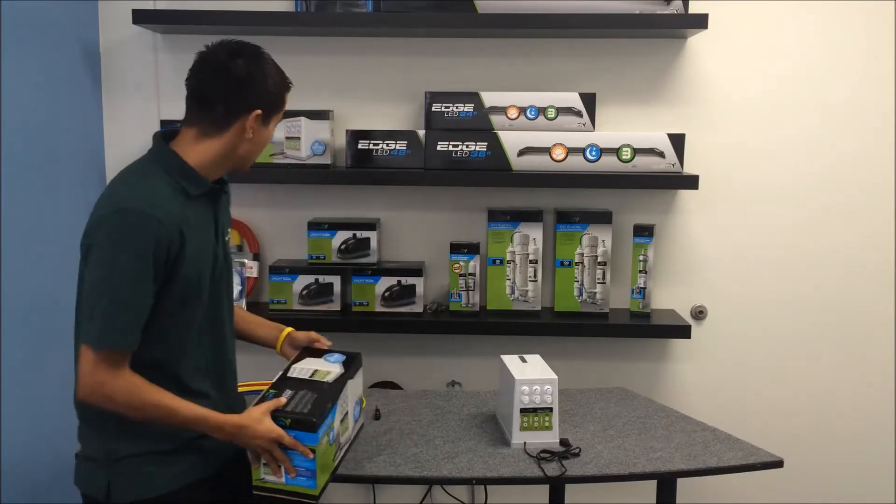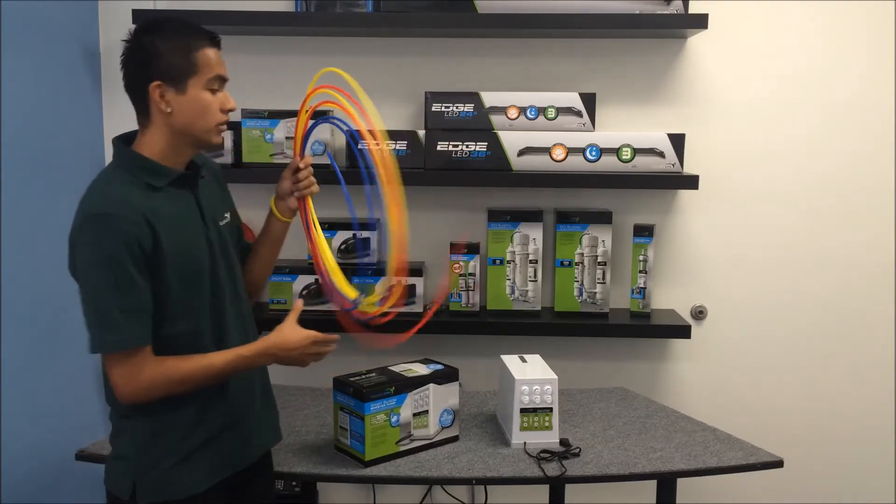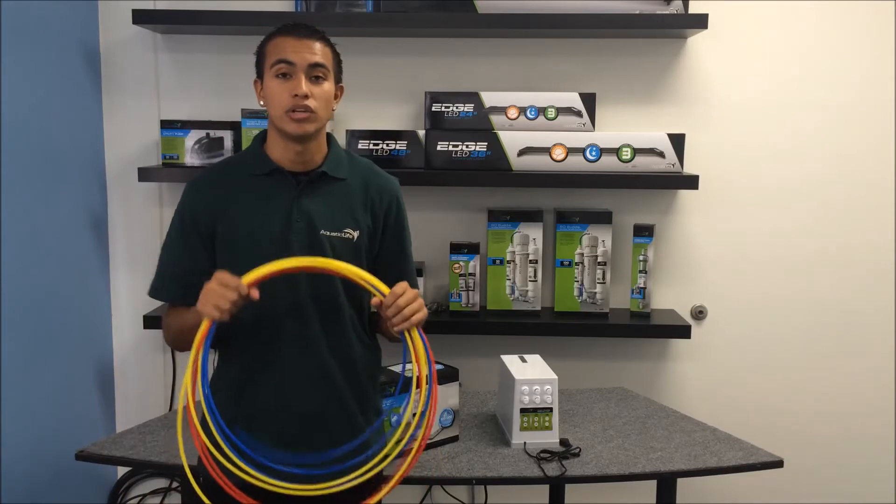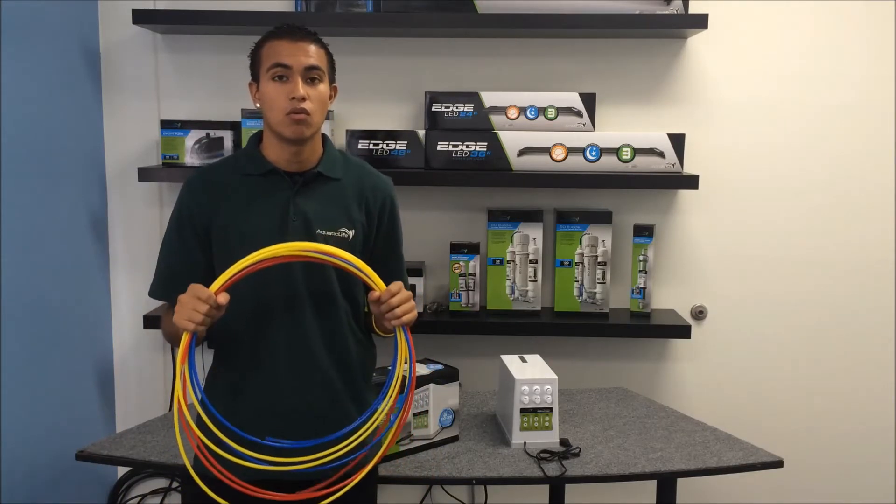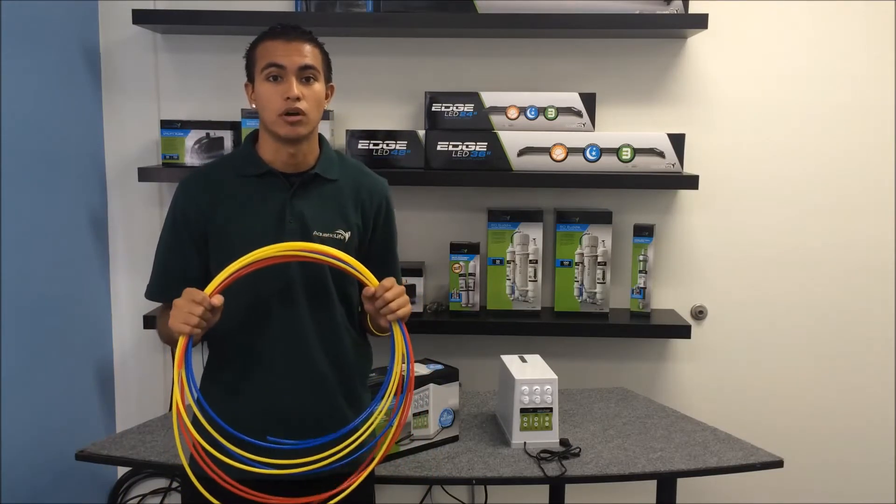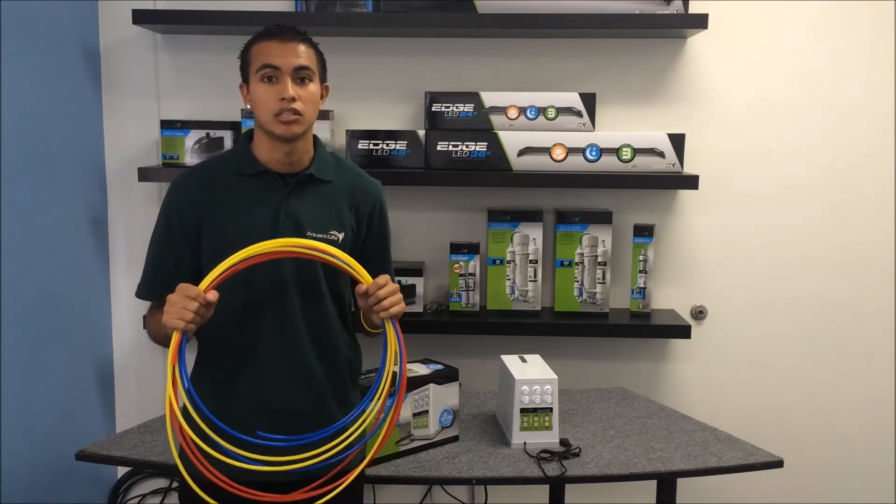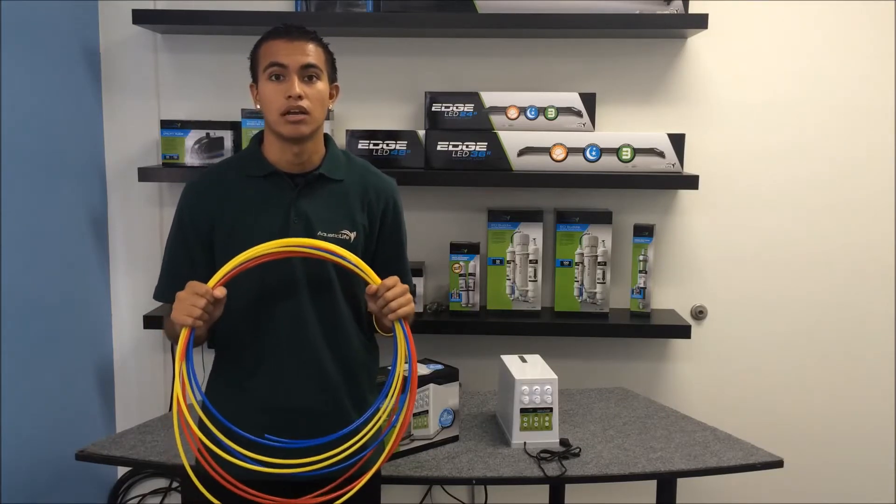To connect the Smart Buddy, you're going to need quarter inch tubing, which Aquatic Life does offer in three different colors, and this helps you identify your supply water, your wastewater, and your filtered water. So we're going to go ahead and connect our Smart Buddy to one of our Aquatic Life RO Juniors.